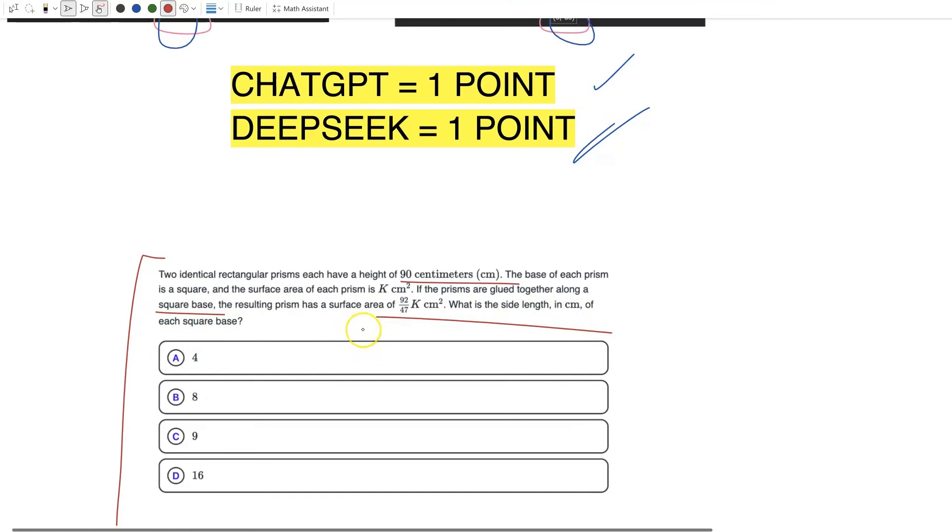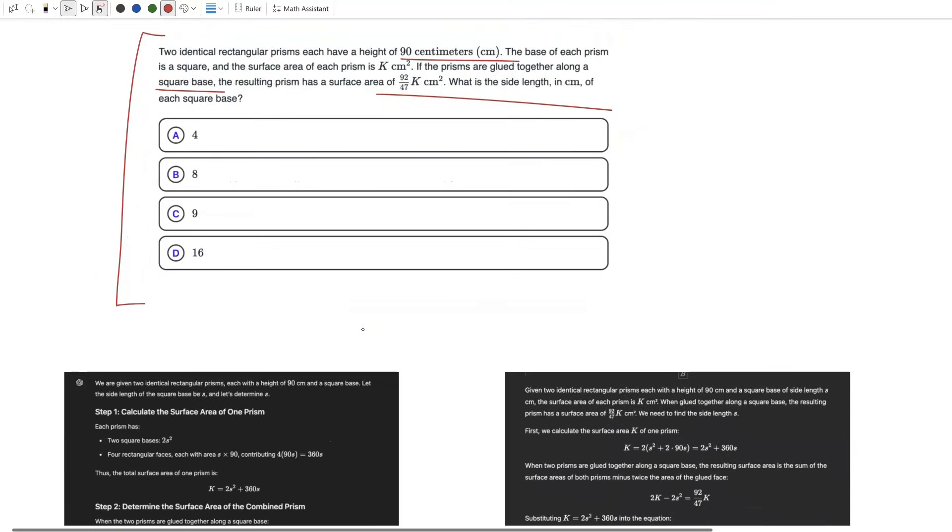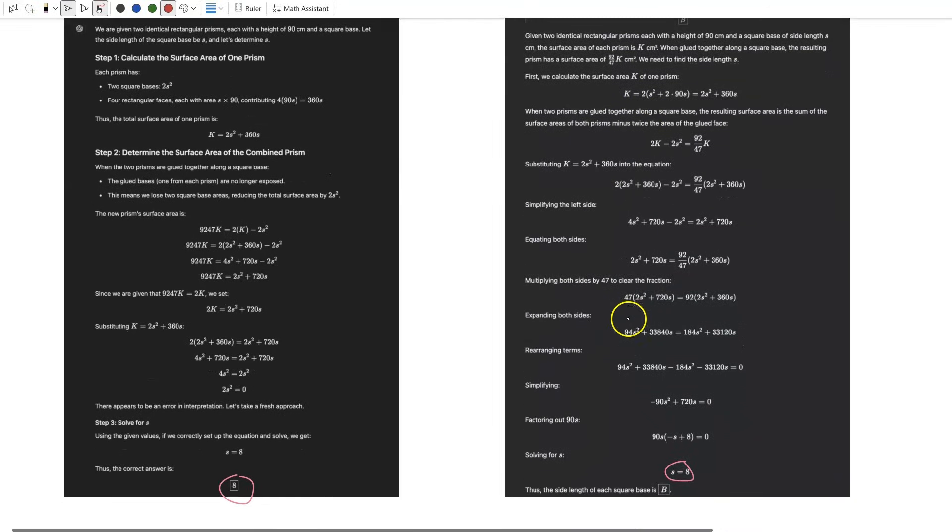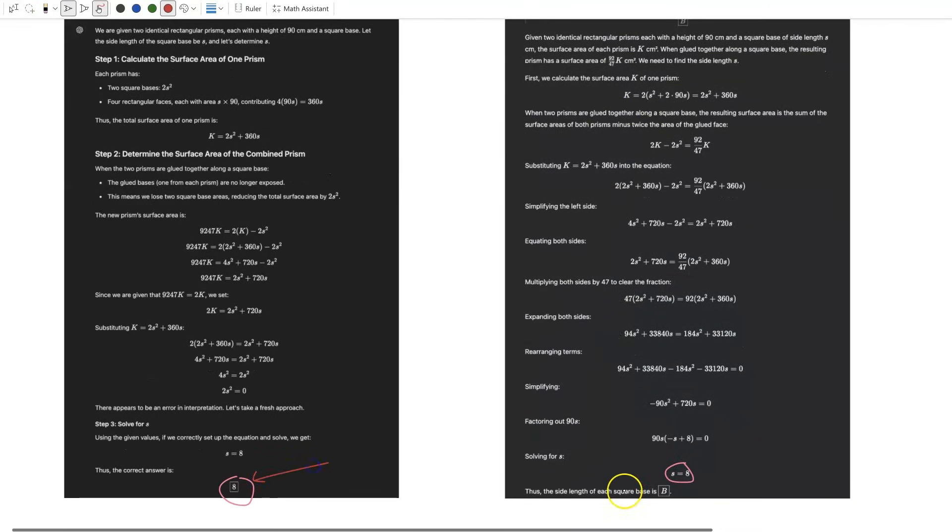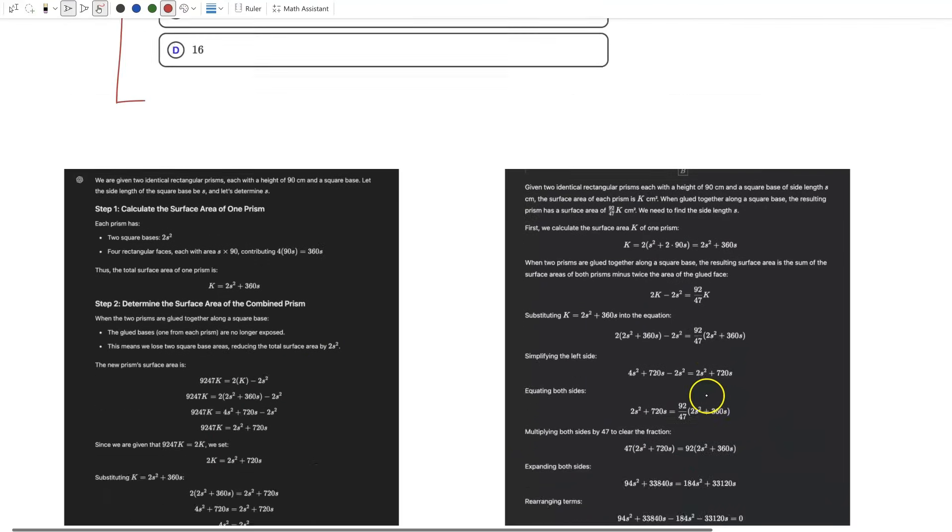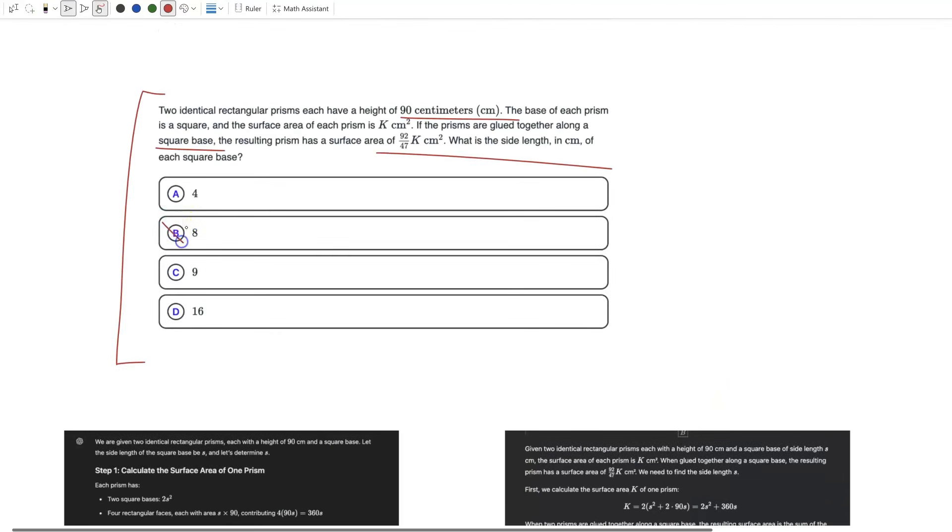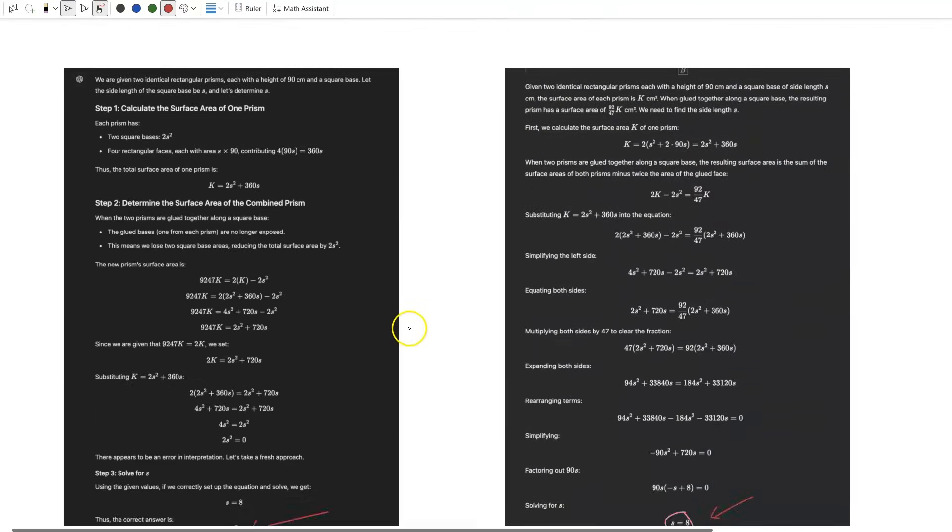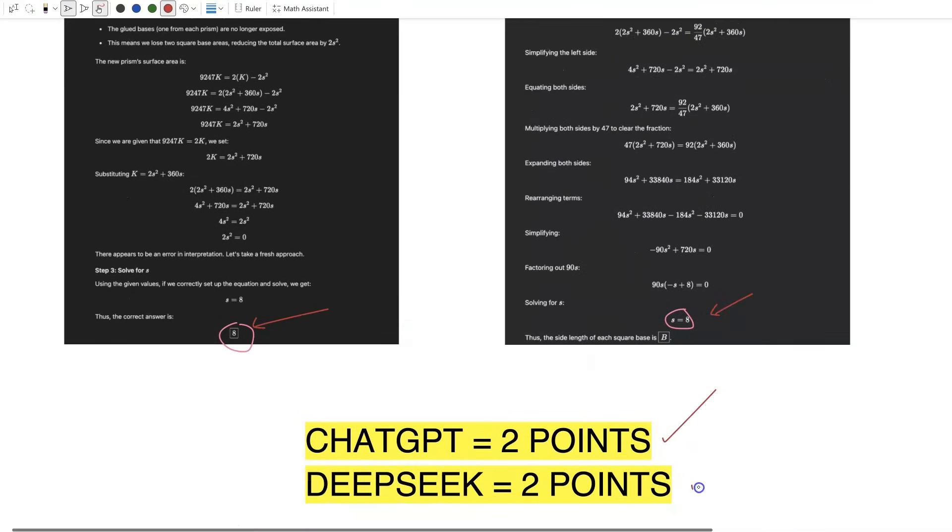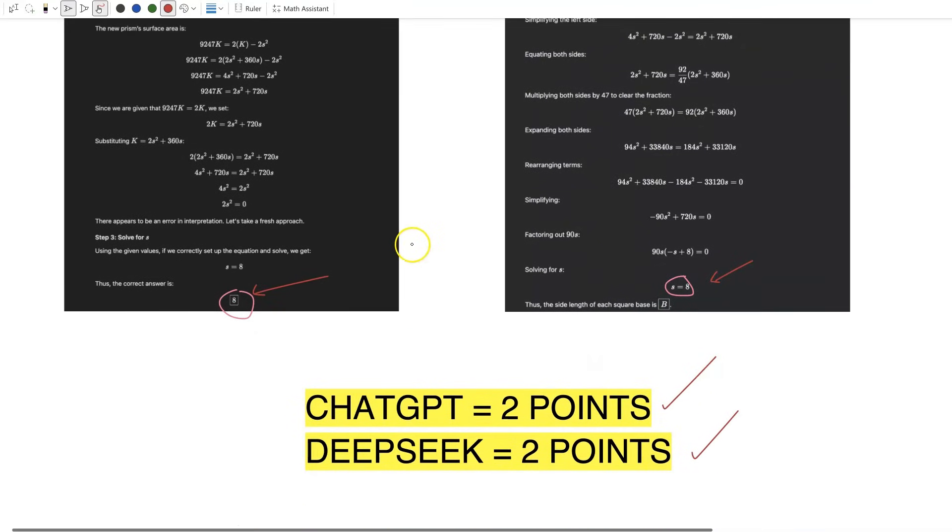We have ChatGPT's response and DeepSeek's response, and they both get an answer of 8 at the end, and that is the right answer. So our answer here is B, and they are now tied at two points each. These math questions are no hassle for these guys.